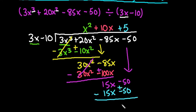When I subtract, this gives me 0. So this one has a remainder of 0. I really don't even have to write that because we don't write remainder of 0. That means that 3x minus 10 is a factor of 3x cubed plus 20x squared minus 85x minus 50, since there is no remainder.